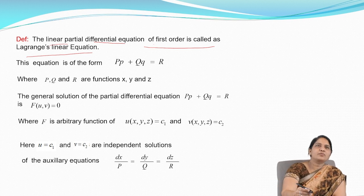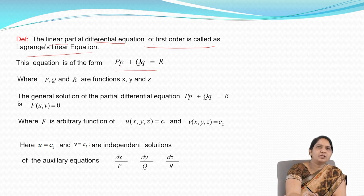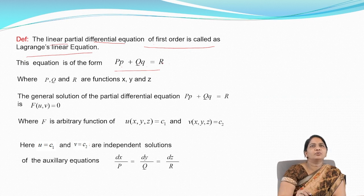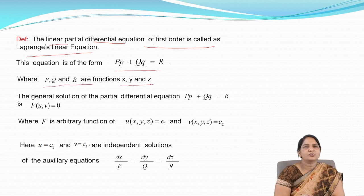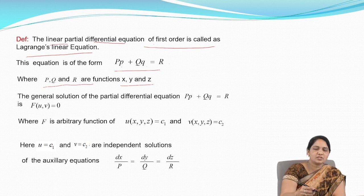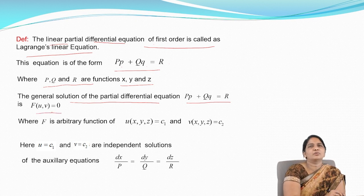The equation form for Lagrange's linear equation is P·p + Q·q = R, where capital P, Q, R are functions of x, y, z. The general solution of this partial differential equation is f(u, v) = 0.